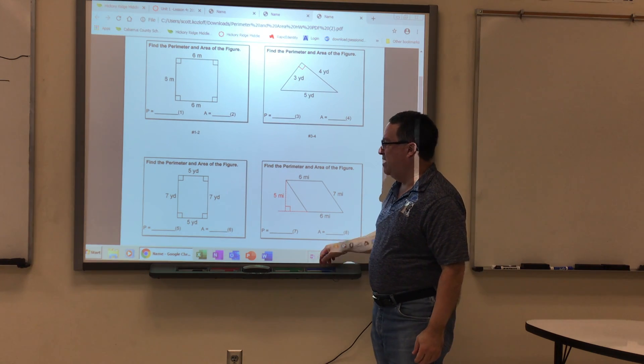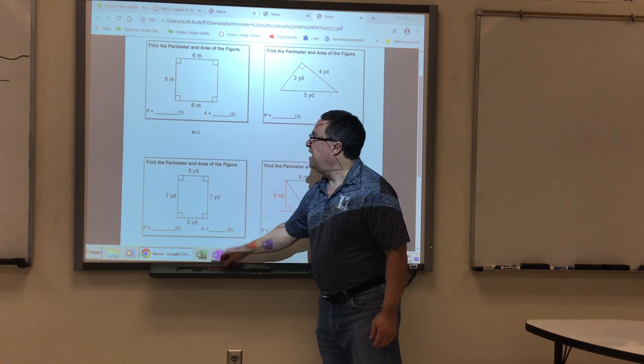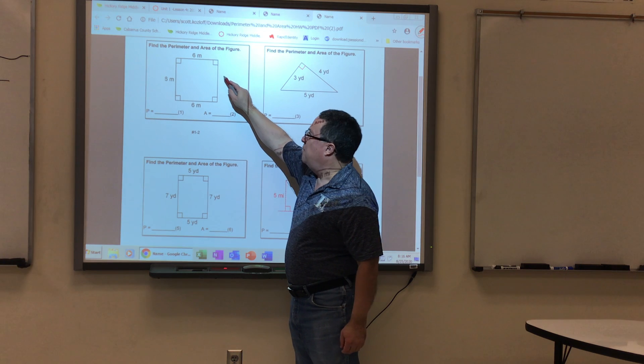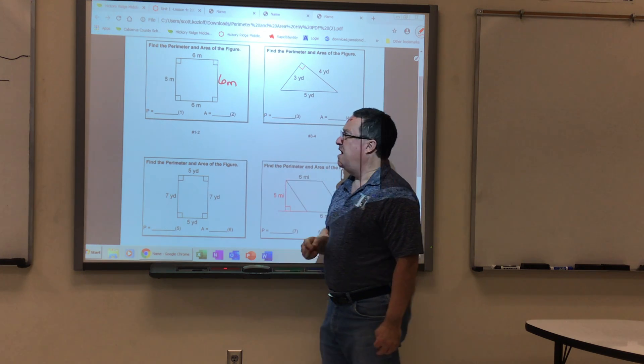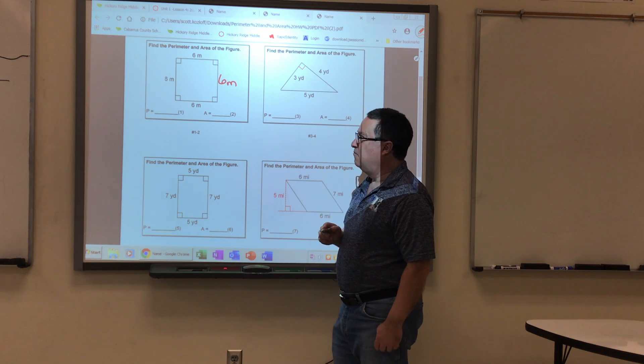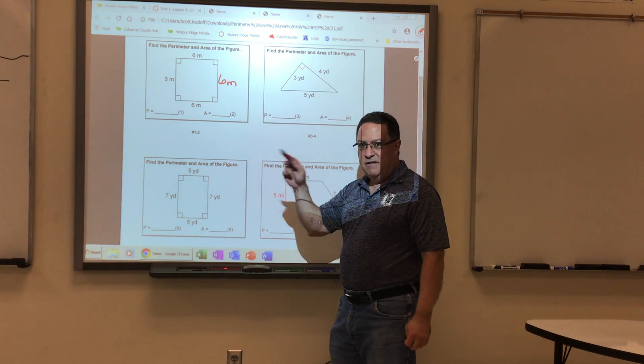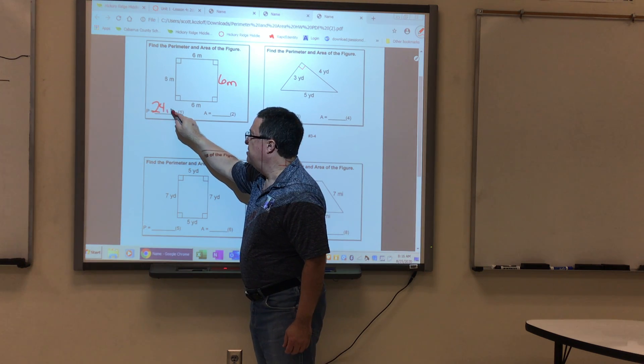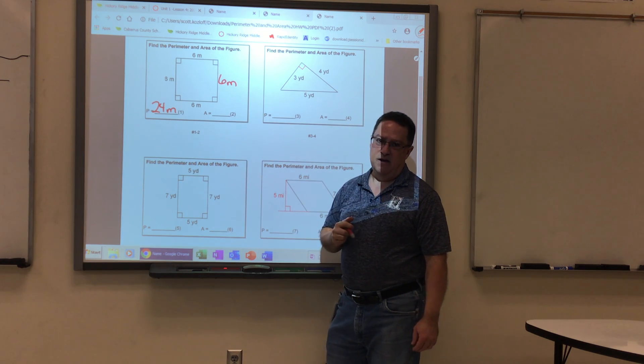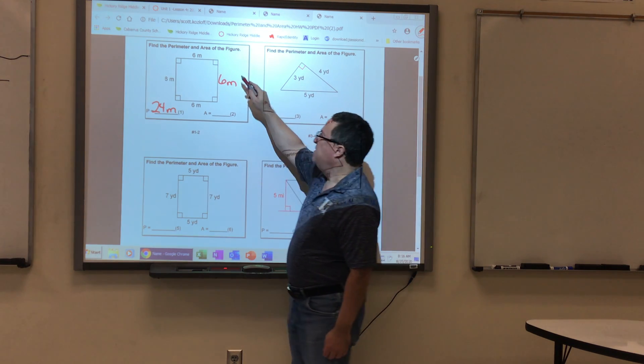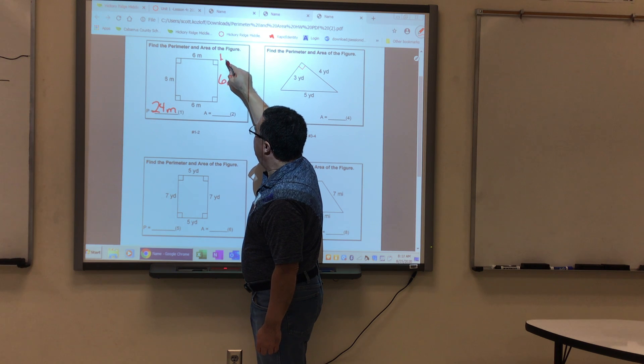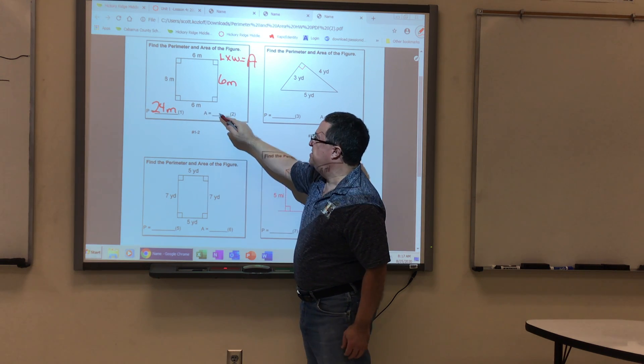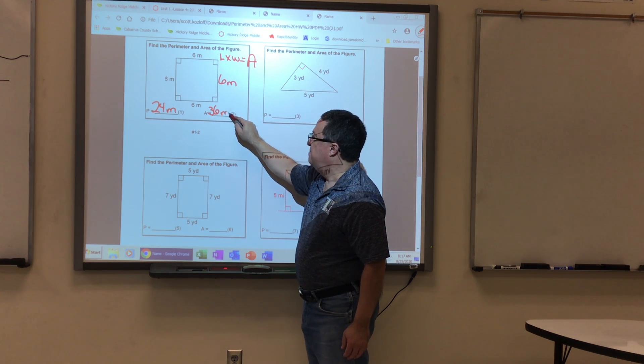First things first, we're looking for perimeter and area. So when I see a shape like this that has sixes in three out of the four sides, we know that fourth side is also supposed to be a six. So after we fill that in for the perimeter, remember we add the outside. Six, six, six, and six is 24. Make sure you label that with meters. For the area, the area of a square is the length times width equals area. So six times six is 36 meters squared.